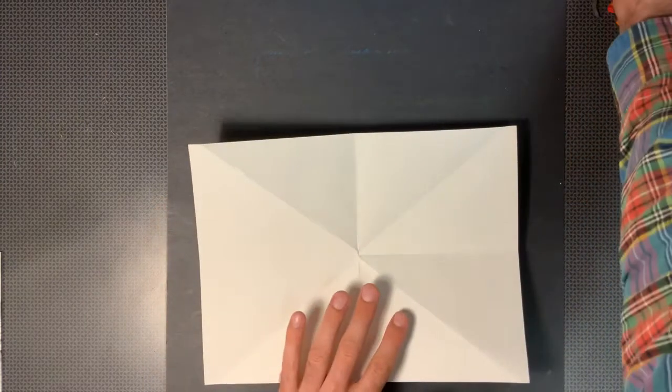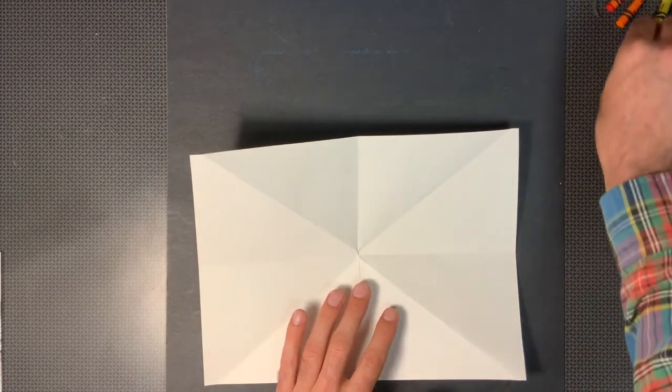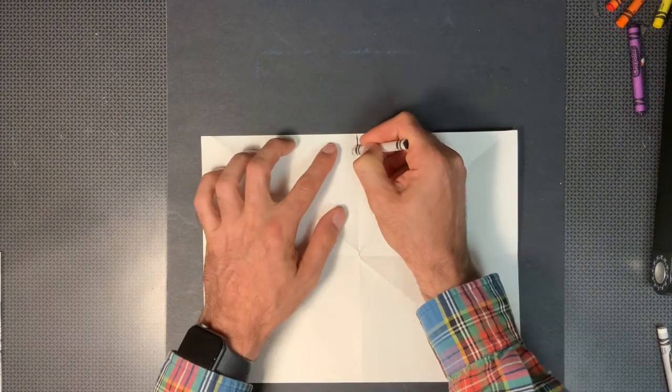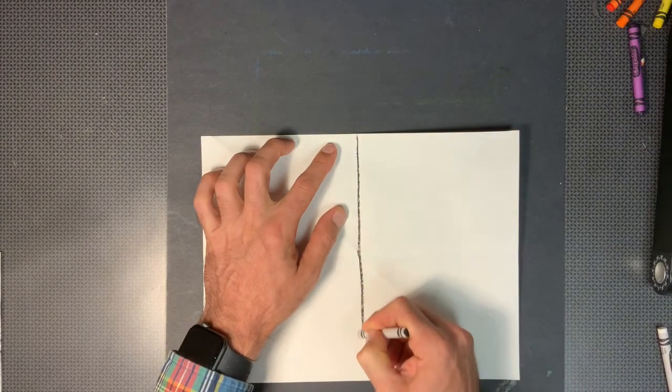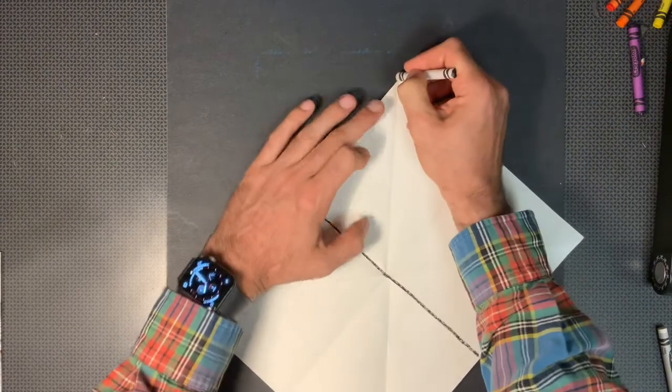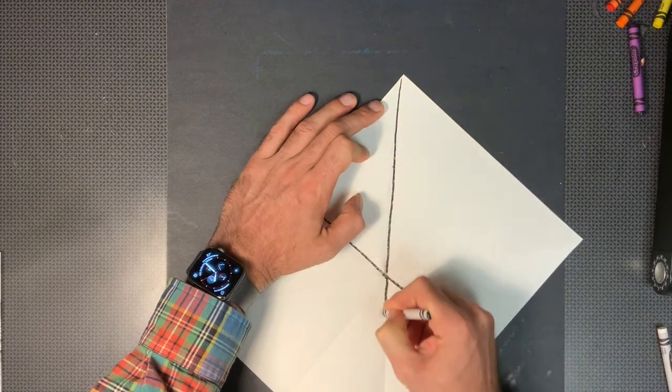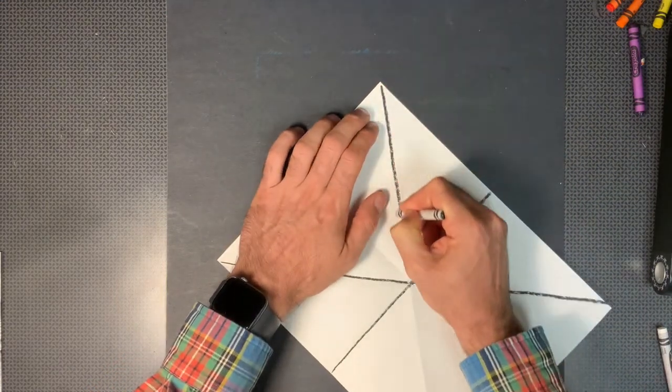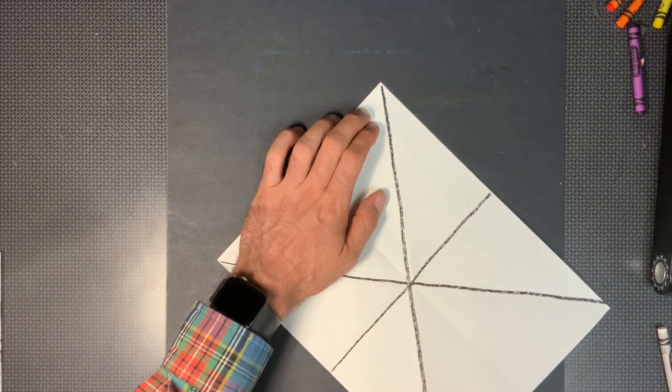What we're going to do now is take a black crayon or marker and we're going to draw over those. So I'm going to take my black crayon and I'll draw over top of my lines creating my spider web pieces.